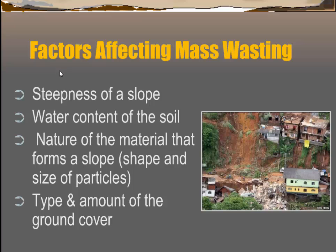Slope is an important factor affecting mass wasting — the steeper the slope, the higher the chance of a mass wasting event occurring. The amount of moisture in the soil also matters: too little or too much moisture increases the chances of mass wasting. The nature of the material — shape and size of particles — also affects mass wasting.